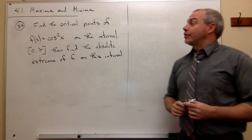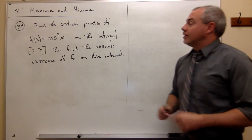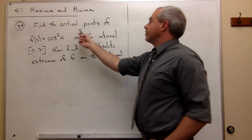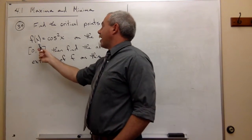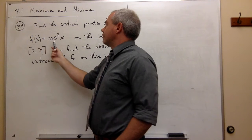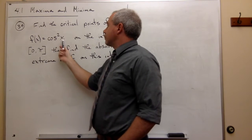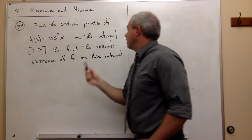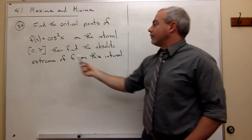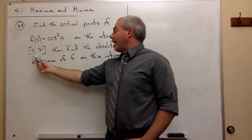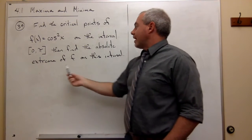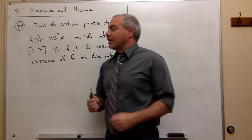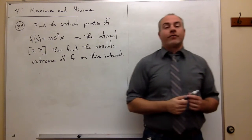In problem number 39, I'd like to find the critical points of the function f(x) = cos²(x) on the interval zero to π. Then I want to find the absolute extrema of f on that interval.